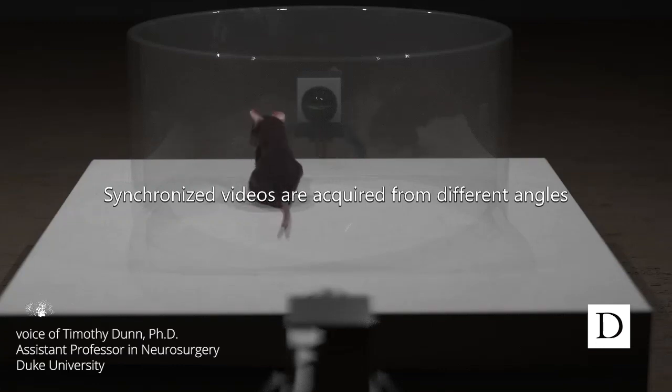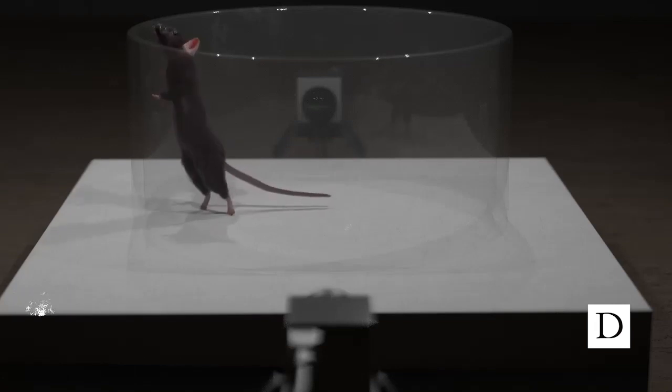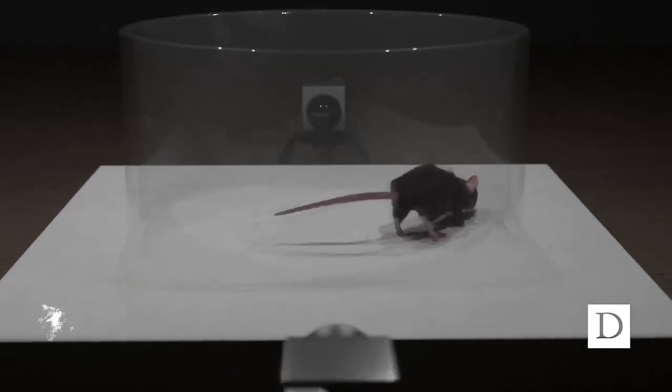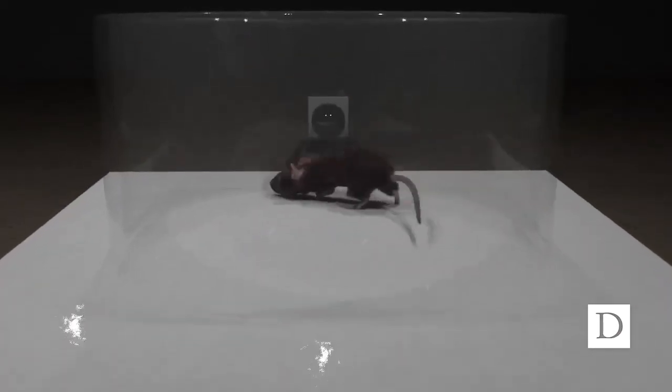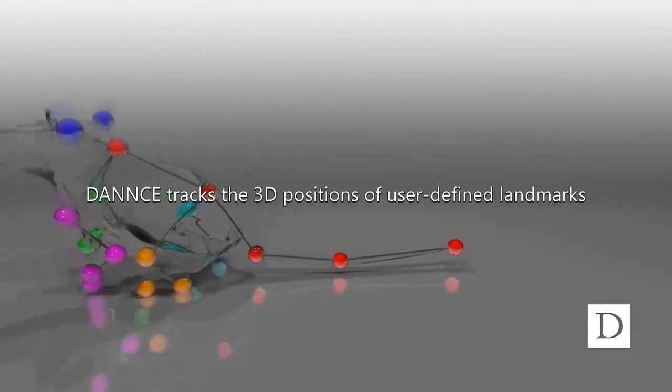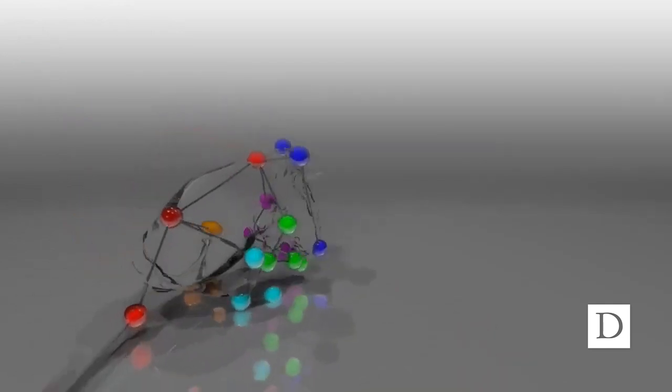We developed a new type of 3D deep learning approach that can take in normal color videos of behaving animals and humans and then output the precise 3D locations of body landmarks, skeletal joints, that you can track over time and thus provide a comprehensive description of how subjects are moving.